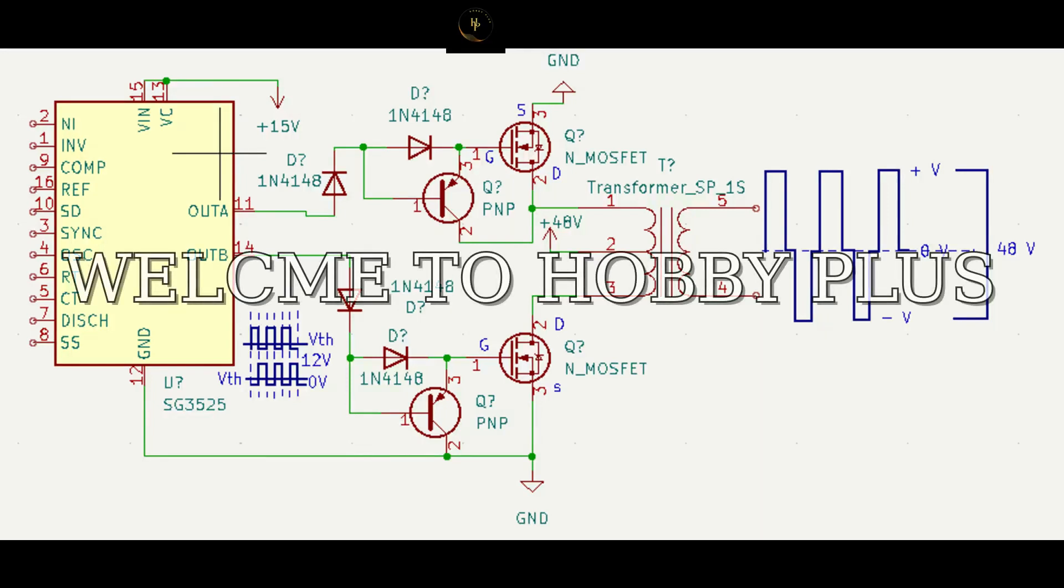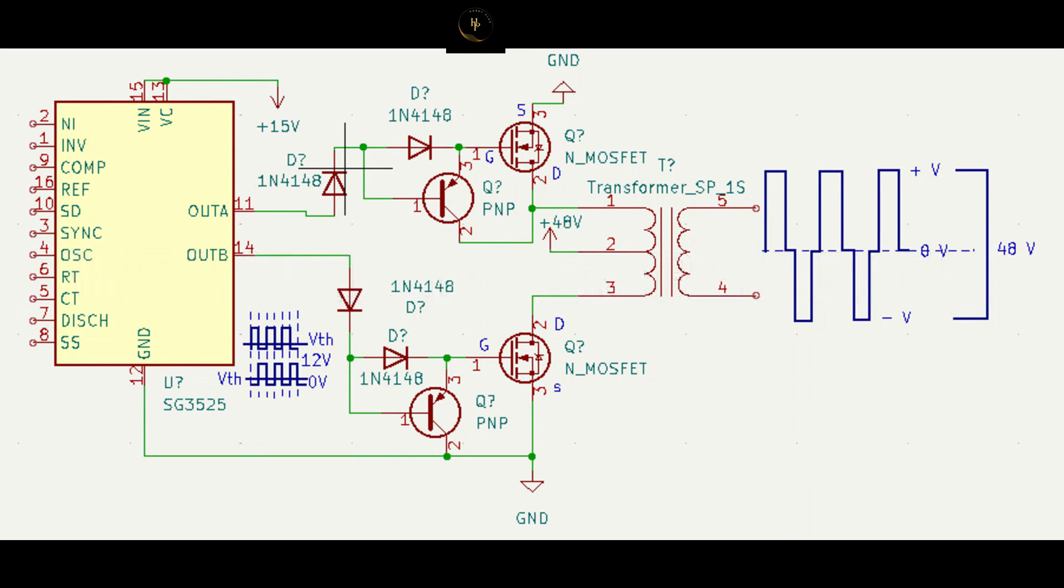Welcome back to Hobby Plus. Today I will discuss the push-pull amplifier. This is your signal generator. You can get signal from this IC. This IC number is SG3525.